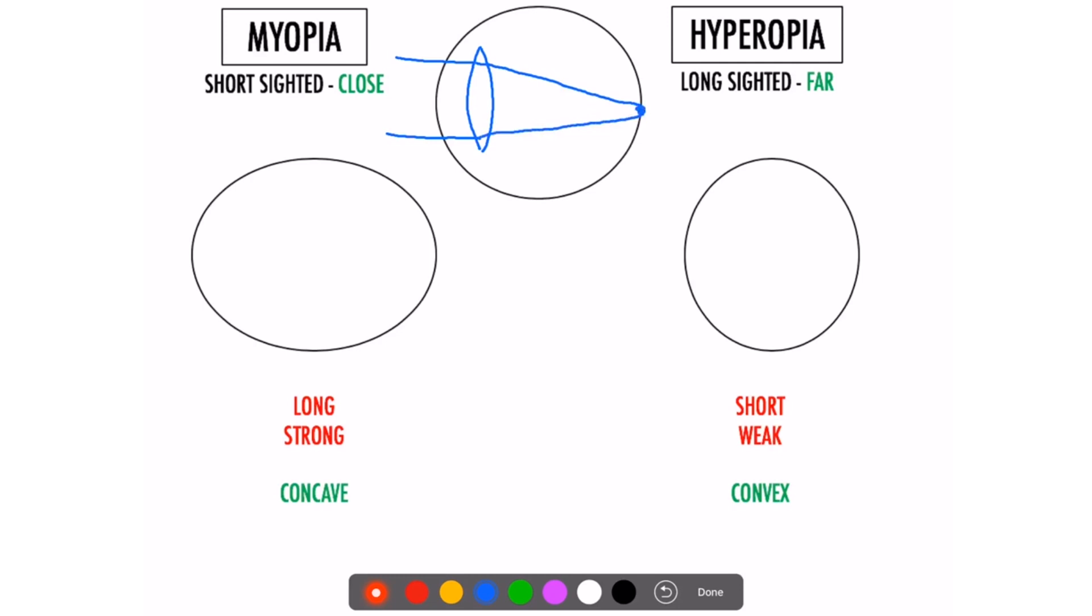However, we know that some people have myopia, which means they are short-sighted, so they can only see well things that are close. If something's far away they can't see that properly. And hyperopia is the opposite. Now why does that happen? Let's look at myopia first. In myopia there's two reasons: either the eyeball is too long, or the lens is too strong.